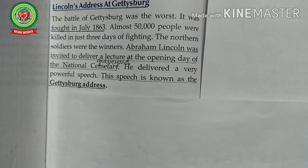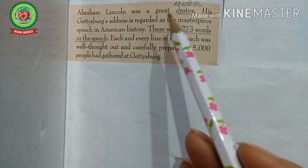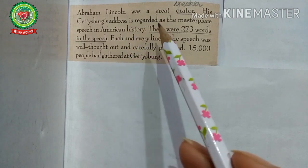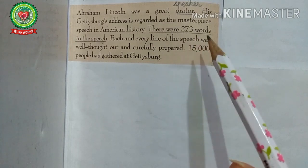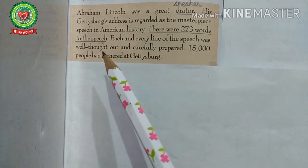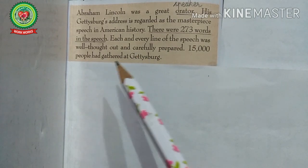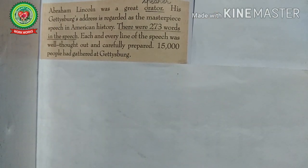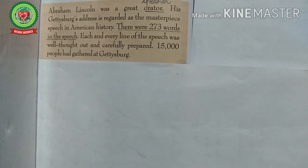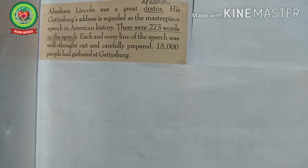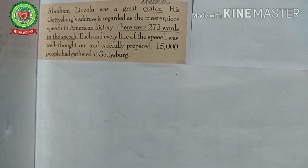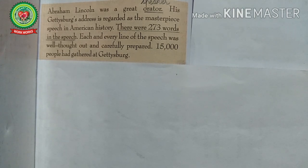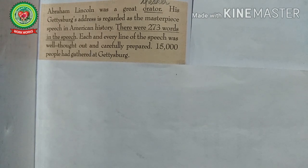Lincoln's three-minute-long Gettysburg Address defined the significance of the Civil War for the American people. Abraham Lincoln was a great orator — orator means speaker. His Gettysburg Address is regarded as a masterpiece speech in American history. There were 273 words in the speech; each and every line was well thought out and carefully prepared. 15,000 people had gathered at Gettysburg. In his speech he told the crowd that the nation would have a new birth of freedom, and that government of the people, by the people, and for the people shall not perish from the earth. He stated that the Union had to remain dedicated to the great task remaining before us, with increased devotion to that cause for which the dead had given the last full measure of devotion. Lincoln honored the fallen dead and framed the soldiers' sacrifices and the war itself as necessary to the survival of the nation.